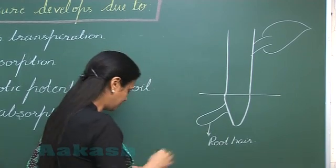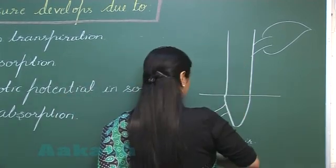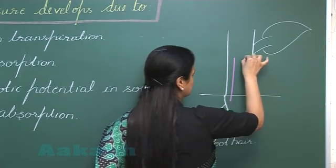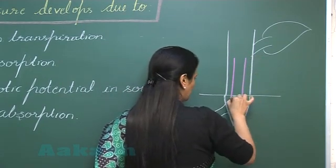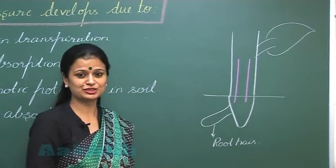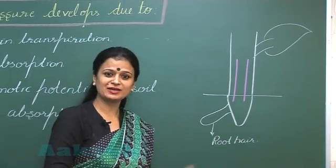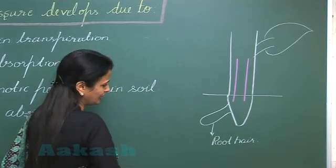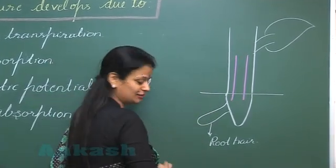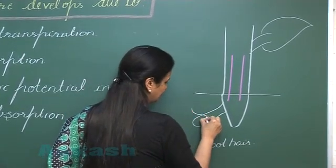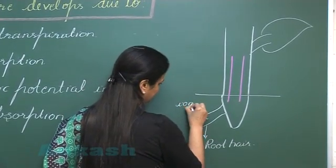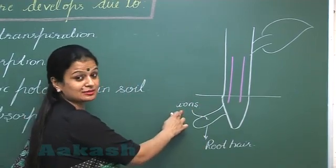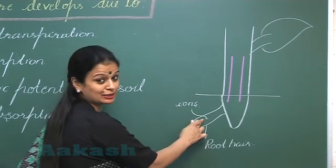Now in the plant, the part which I am making here is the xylem channels, or you can say the tracheid elements, which includes xylem vessels as well as tracheids. Now, from the soil the ions and salts are taken up by the root here.